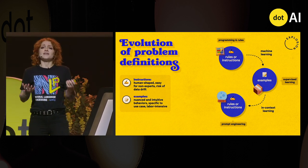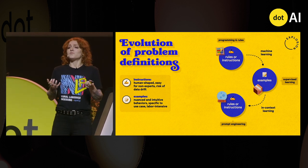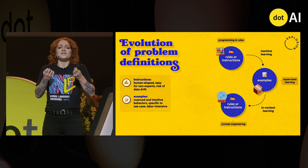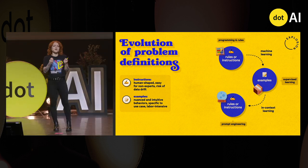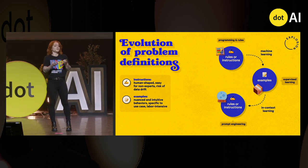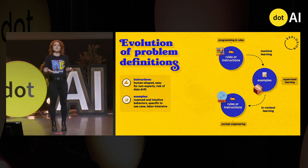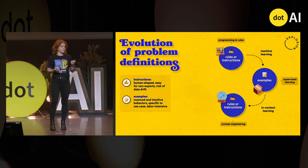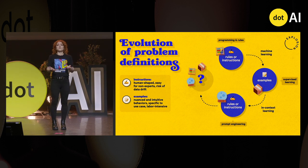Examples, on the other hand, can also be very powerful because they let you express nuanced behaviors — things where you know the answer but can't quite express it in words. And they're also a great way to inject knowledge from your very specific task and use case into your application. But of course, it's quite labor-intensive to create them.